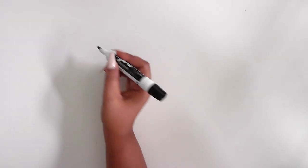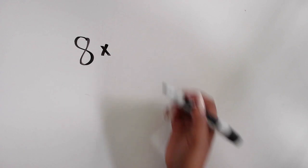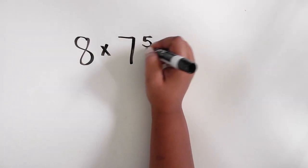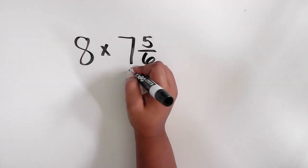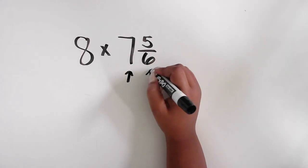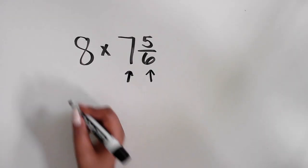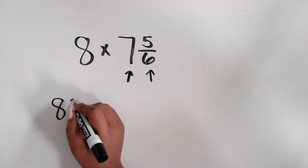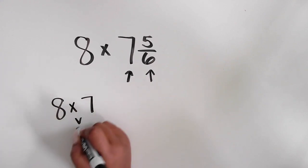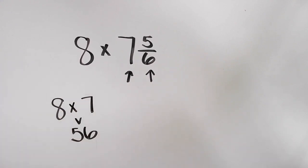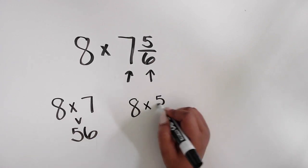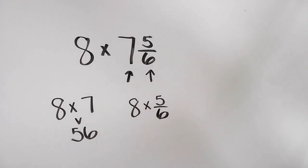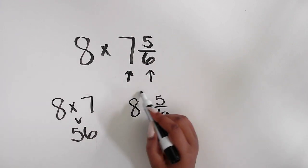Let's do one more example to help build up that confidence you want to have while exploring this skill with your students. The expression is 8 times 7 and 5 sixths. Again, you can decompose that mixed number into its whole number and its fraction: 7 is the whole number and 5 sixths is the fraction. 8 times 7 — that's the math fact — equals 56. The next part is multiplying the 5 sixths, so 8 times 5 sixths. Think of it as 8 groups of 5 sixths, or just 8 times 5.